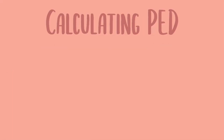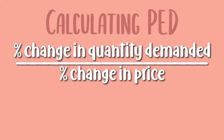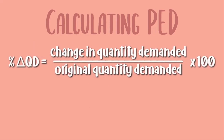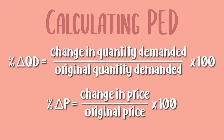Now let's look at how we could calculate the PED. The formula is the percentage change in quantity demanded over the percentage change in price. You could also write it in symbol form. To calculate the percentage change in quantity demanded, it is the change in quantity demanded over the original quantity demanded multiplied by 100. And to calculate the percentage change in price, it is the change in price over original price multiplied by 100.